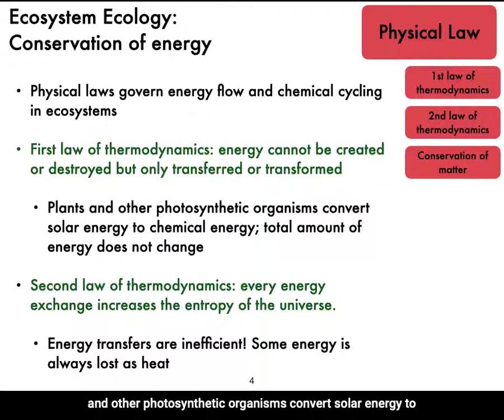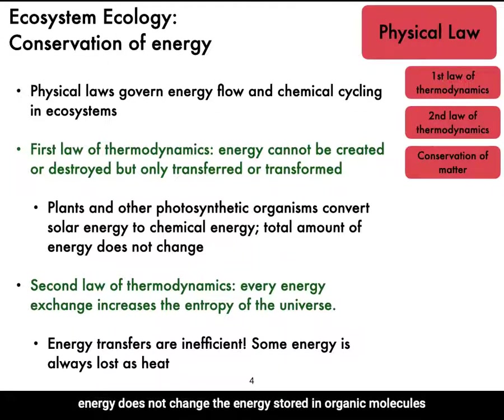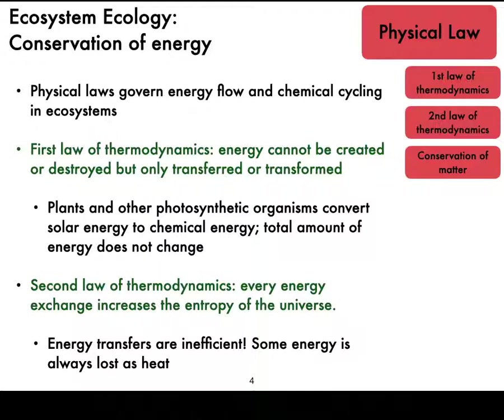Plants and other photosynthetic organisms convert solar energy to chemical energy. But as they do so, the total amount of energy does not change. The energy stored in organic molecules must equal the total solar energy intercepted by the plant, minus the amounts reflected and dissipated as heat.